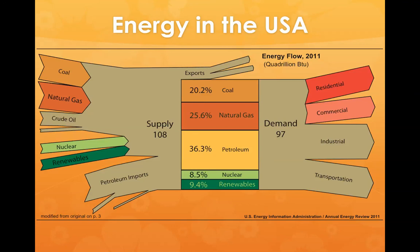What you're seeing here is a flow chart — it's actually called a Sankey diagram. It shows the flow of energy across supply and demand for the United States.